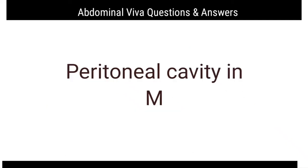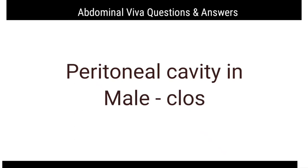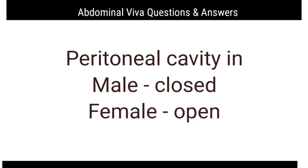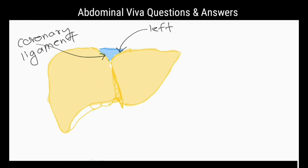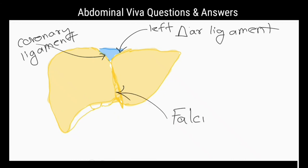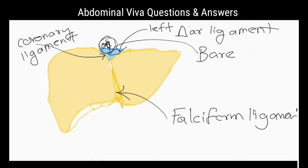Is the peritoneal cavity a closed sac? In the male it is a closed sac, but in the female it communicates with the exterior via the uterine tubes. Does the peritoneum cover the liver completely? No, it fully covers the liver except for the bare area of the liver, where the peritoneum is reflected to the diaphragm.